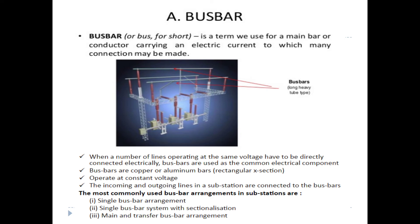First one is the bus bar. A bus bar is the term used for the main bus or conductor carrying an electric current to which many connections may be made. It is a long heavy tube type conductor. In the substation, we have incoming lines and feeders — 3-phase R, Y, B. The substation may be 110 kV, 66 kV, or 33 kV. The incoming feeder supply goes to a 110 kV bus bar, then to a step-down transformer to reduce the voltage level.